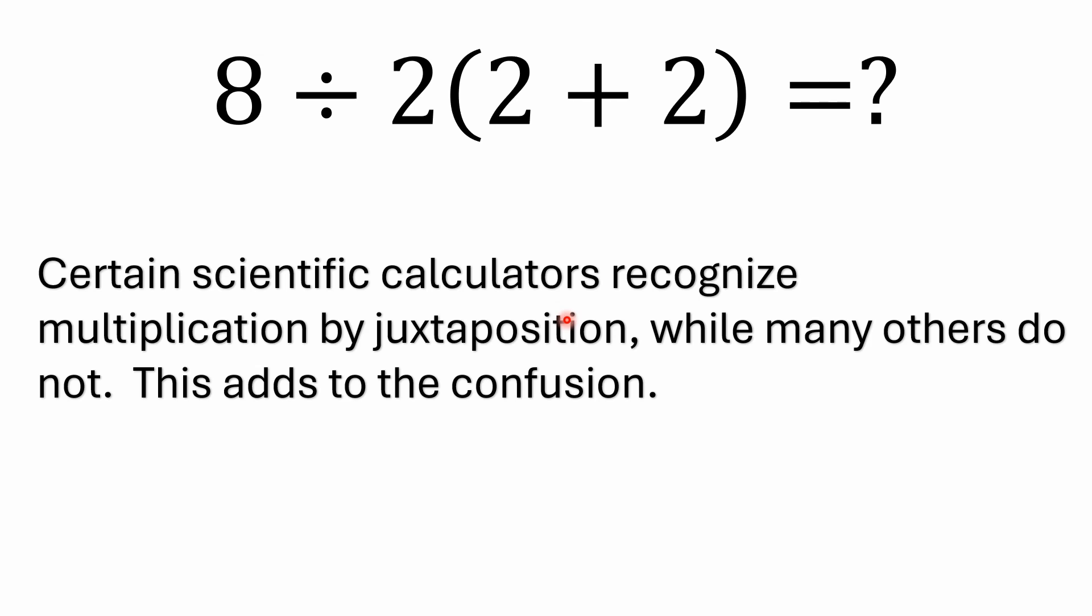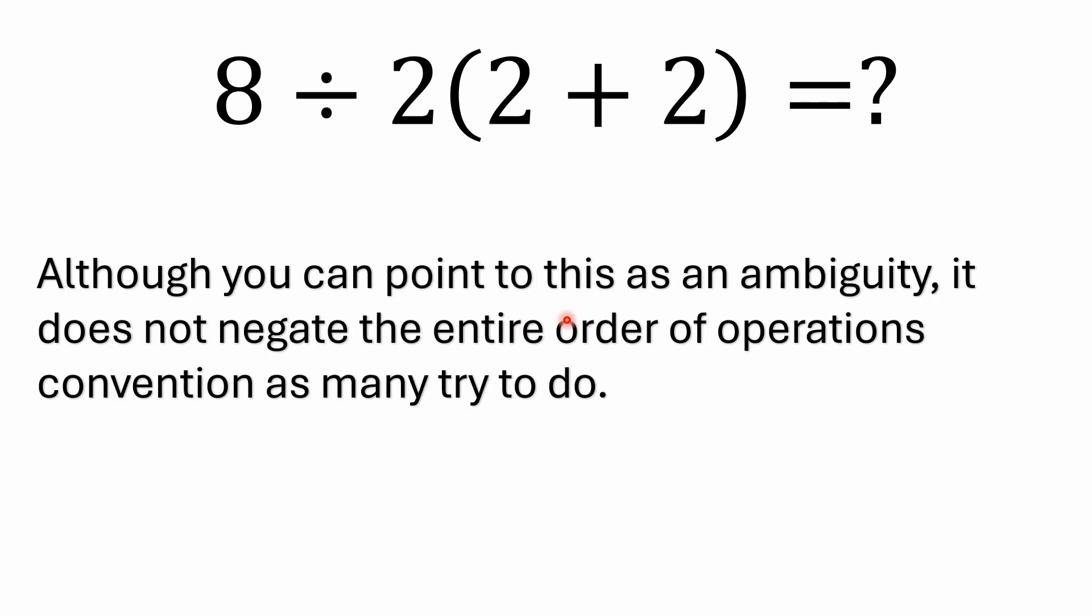Now, I will say there are certain scientific calculators out there. I've got other videos on some of the other viral problems where I've gone through and actually shown the manuals. There's different Casio calculators that actually specifically spell out in their manual that they do recognize multiplication by juxtaposition. Most don't. Many do not do that. So there's a handful that do. So you just have to be aware of that. There's some viral pictures out there showing two calculators side by side that give you a different number. But, although you might try to point to this as an ambiguity with the implicit multiplication,